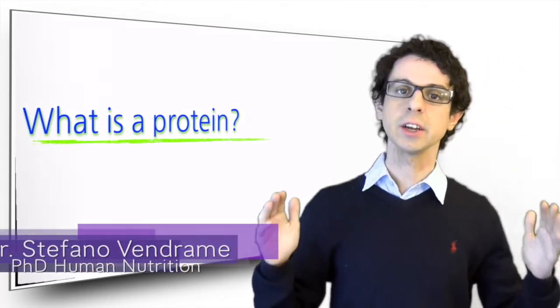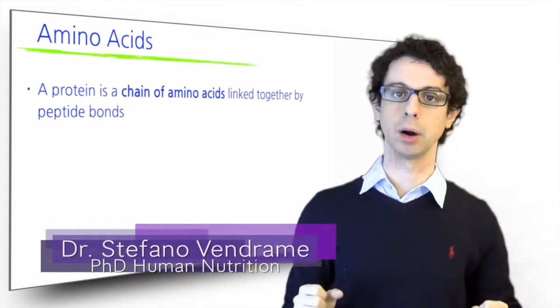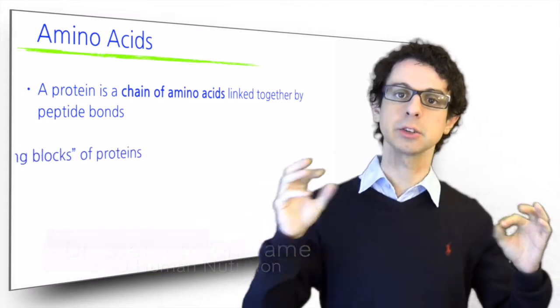A protein is a chain of amino acids that are linked together by peptide bonds. You can picture a protein as a linear chain, sort of a necklace.